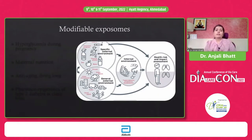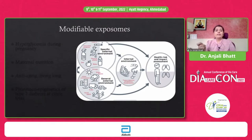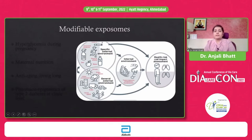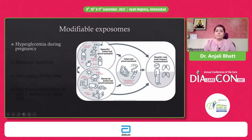What can modify the epigenome? There is a vast list of things called exposomes. It can be a specific external environment like drugs or chemical pollution; general external environment like climate change or change in season; internal environment like the patient's genetic profile, transcriptomics, proteomics, and metabolomics; and health risk and impact assessment. For example, relating to our day-to-day practice: hyperglycemia during pregnancy — if we modify the level of glycemia during pregnancy, we know we are modifying the health and disease risk of the child that is born.